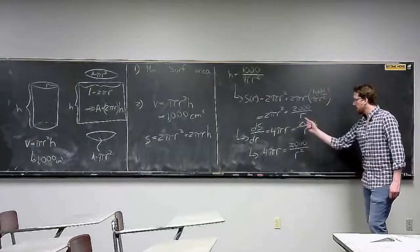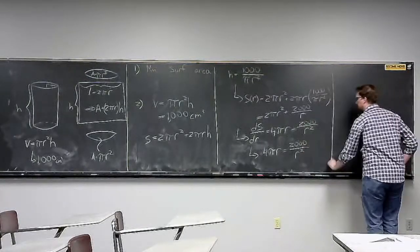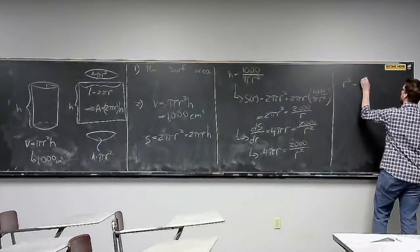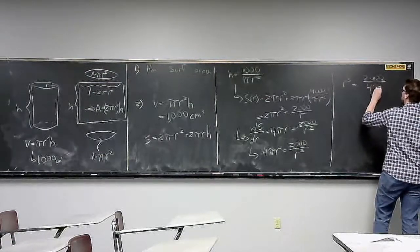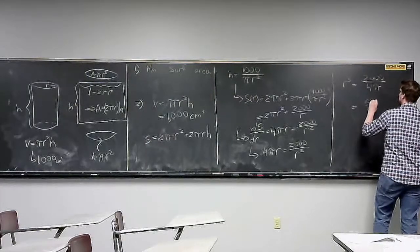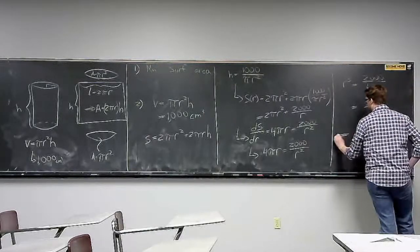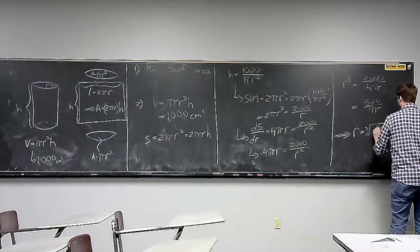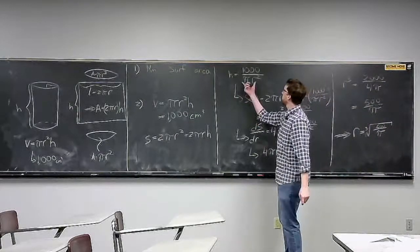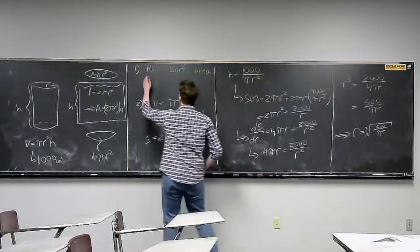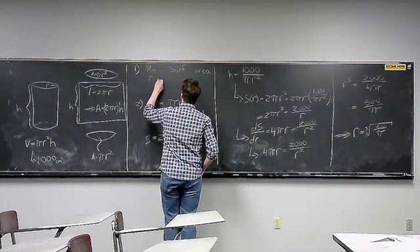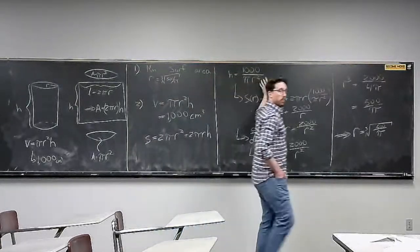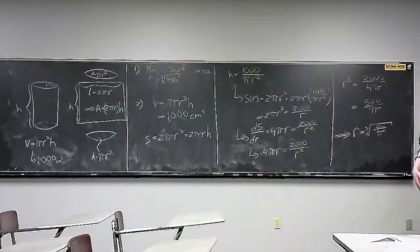Multiplying both sides by r² and dividing by 4π gives r³ equals 2,000 divided by 4π, which simplifies to 500 over π. Therefore r equals the cube root of 500 over π. From there, we plug r back into the equation h equals 1,000 divided by πr² to find h. That's all there is to this problem.